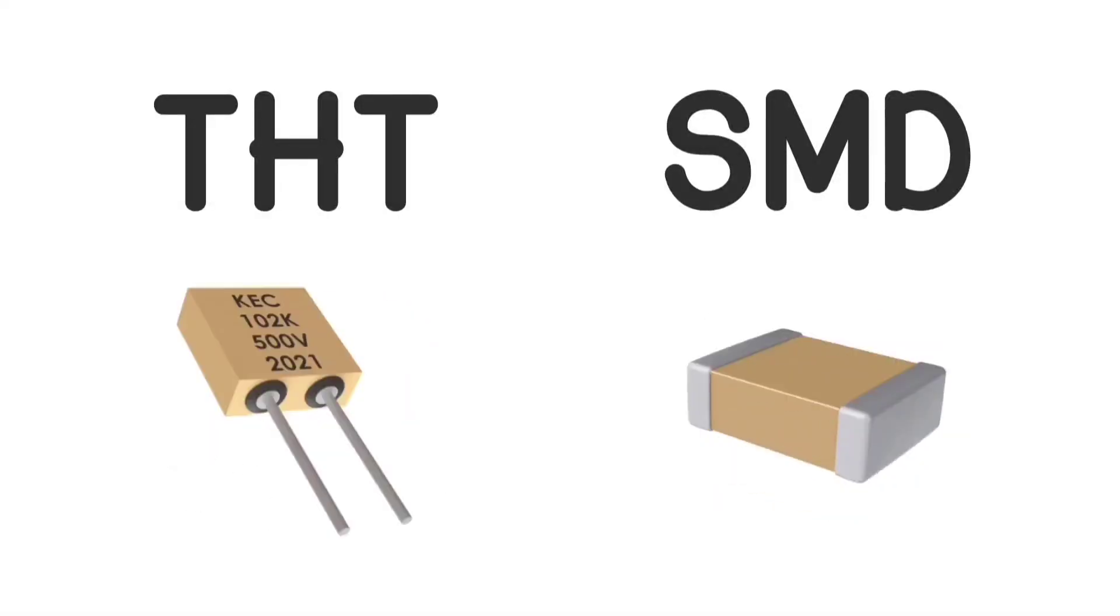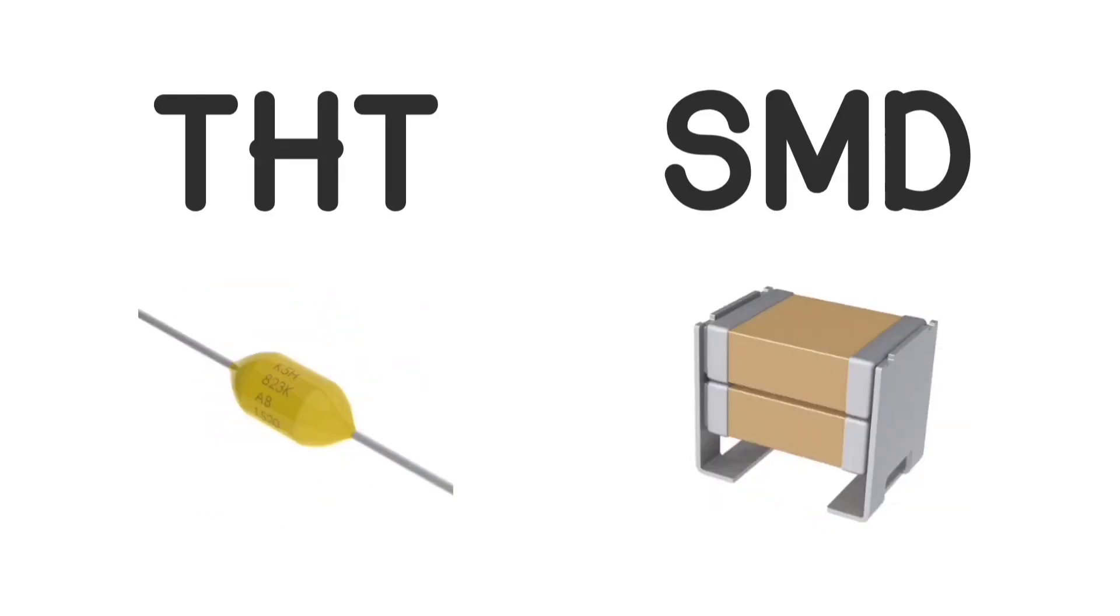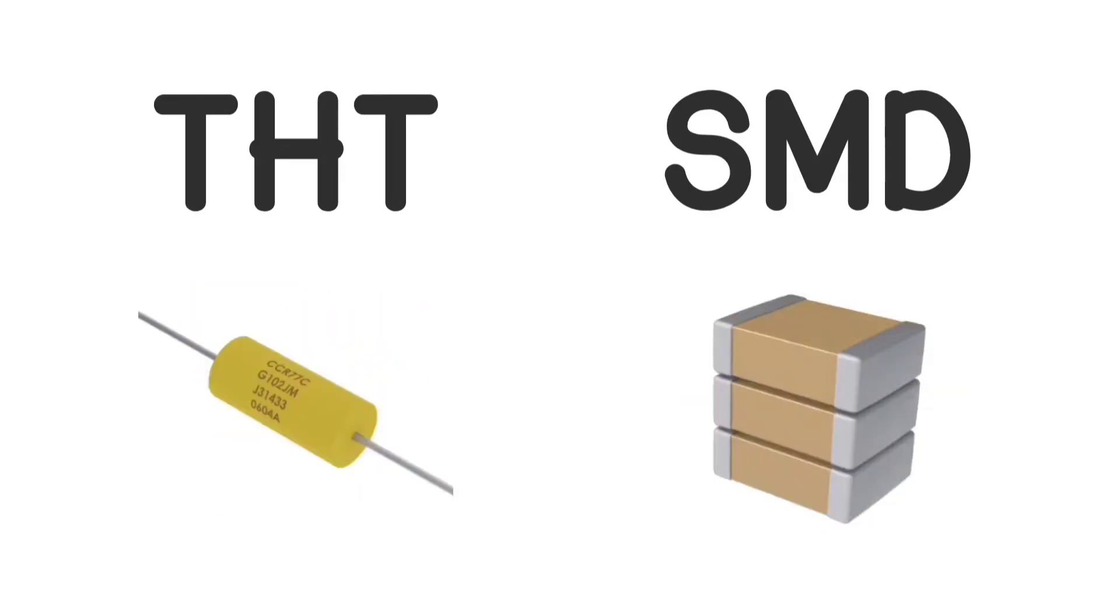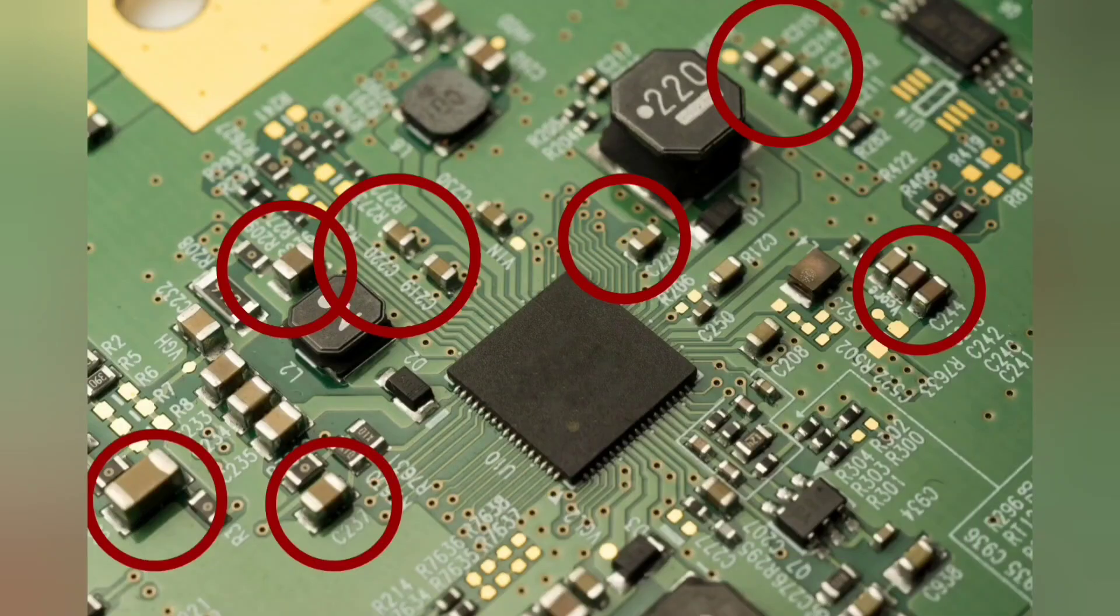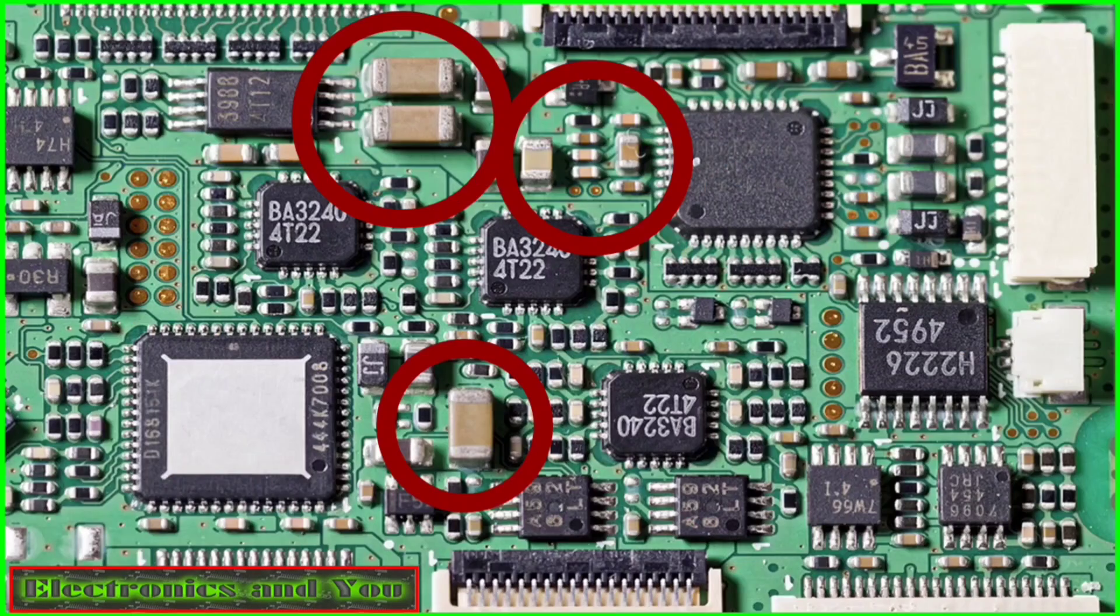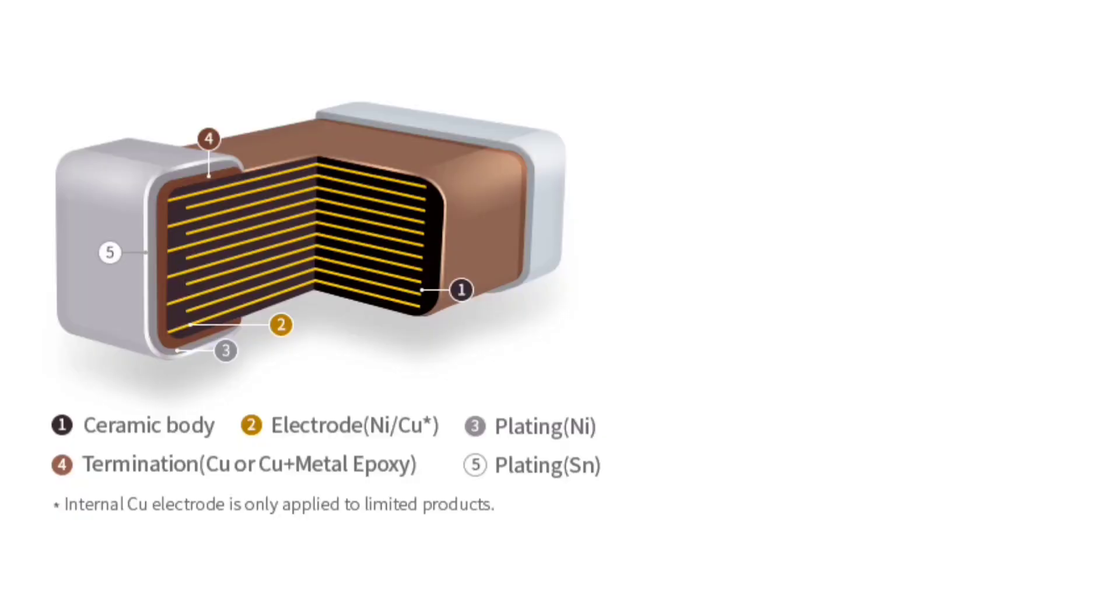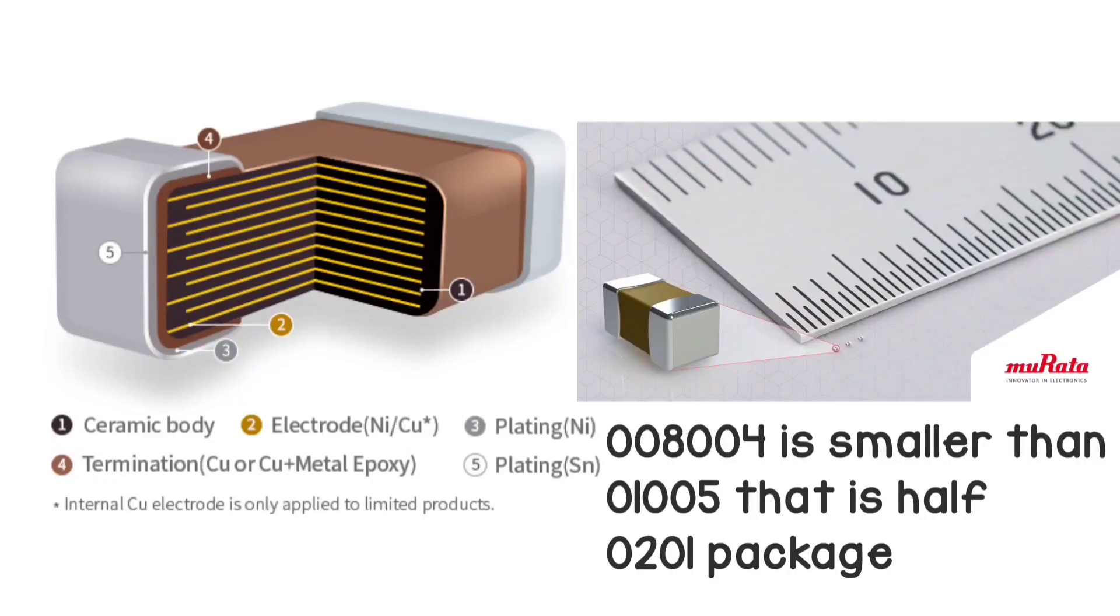MLCC comes in various packages, either THT or SMDs. We prefer them over Electrolytics because they are smaller and have lower parasitics. They are used so much that they are practically in any PCB you will ever encounter. This is how MLCCs are made. As they suggest, there are various layers one top of the other, so that we can make it really small.